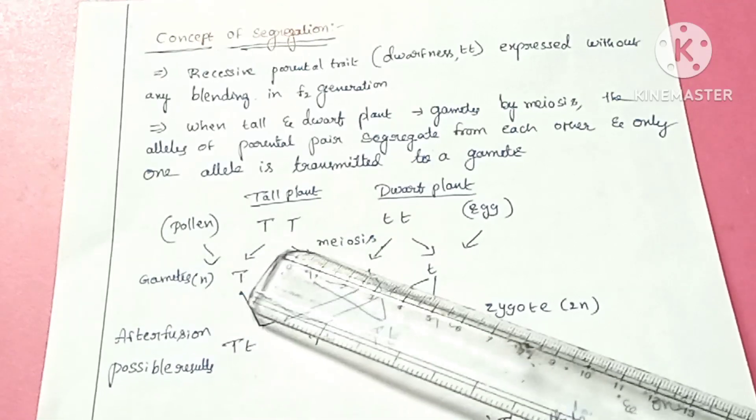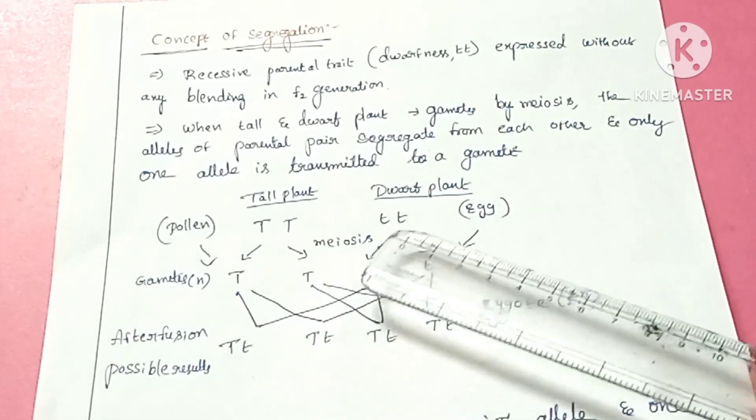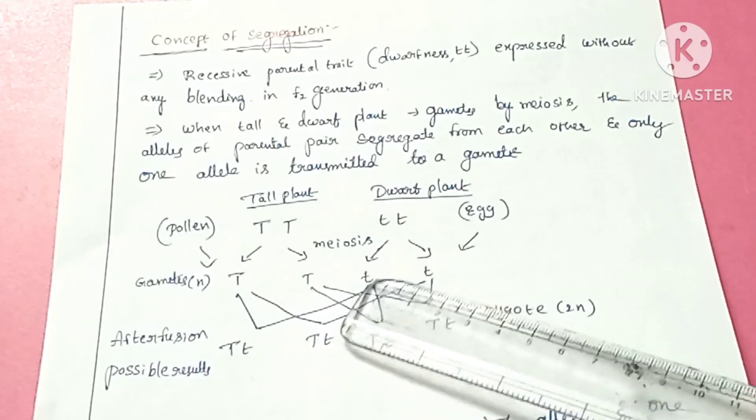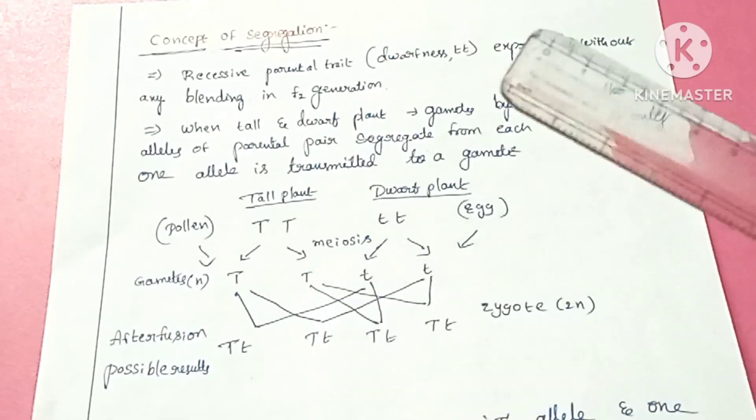From TT, one capital T type gamete is formed, and from small t small t, one small t type gamete is formed. Only one allele is transmitted to each gamete.